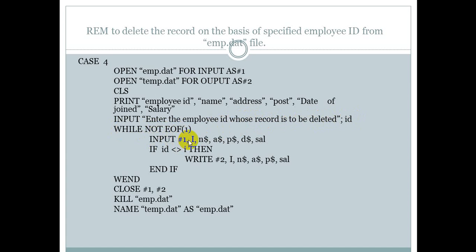INPUT#1 reads the content of the data file and stores it in the variables. If the entered id is NOT equal to the stored i, then we write that content to the temporary file using WRITE#2. Then we close the files, kill the original emp.dat file, and rename the temporary file as emp.dat — so we get the original file back without the deleted record. If id equals i, the data won't be written — that's how the record is deleted. The condition 'id not equals to i' is what causes the deletion.